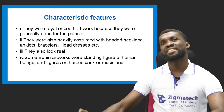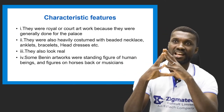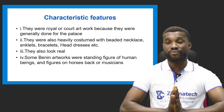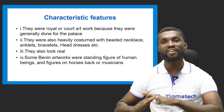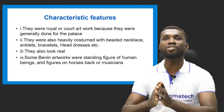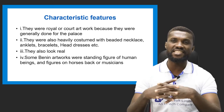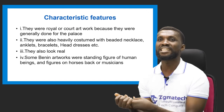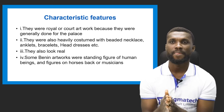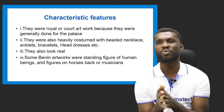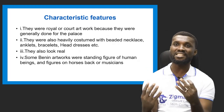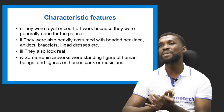The Benin people used mediums like stone, wood, terracotta, bronze, ivory, and they carved on elephant tusks. The Benin art is located in Benin City in Edo State. The characteristic features: they are royal or court artworks, done for the kings and royalties. They are heavily costumed with beads, necklaces, anklets, bracelets, and headdresses. They also look real, like the Ife art. Some Benin artworks depict standing figures of human beings, figures on horseback, and musicians.